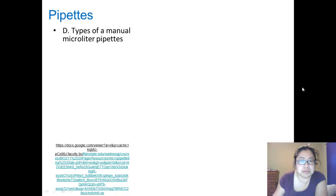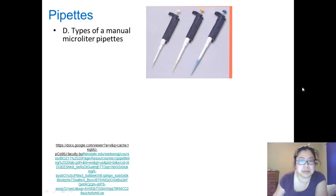There are types of microliter pipettes. You have the P20, which ranges from 2 to 20 microliters. The P200 ranges from 20 to 200 microliters. And the P1000 ranges from 200 to 1000 microliters.